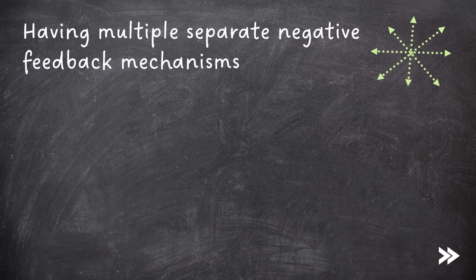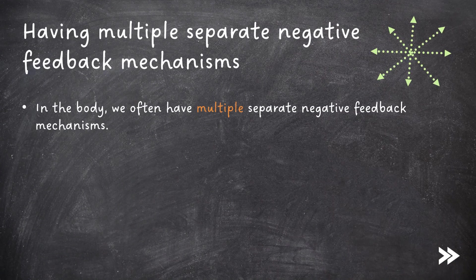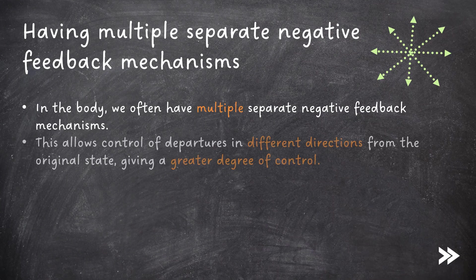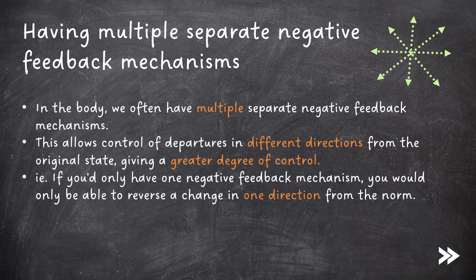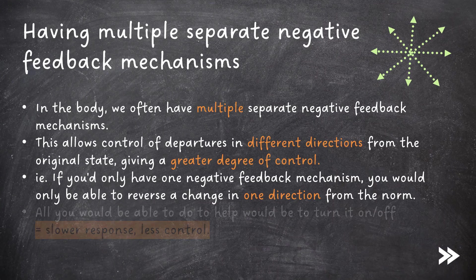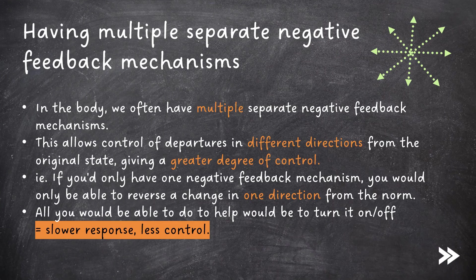Note that in the body, we often have multiple separate negative feedback mechanisms. This allows control of departures in different directions from the original state, giving a greater degree of control. If you'd only have one negative feedback mechanism, you would only be able to reverse a change in one direction from the norm. All you would be able to do to help would be to turn it on or off, leading to a slower response and less control.